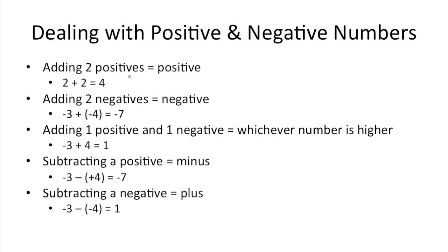So in general, when you have two positives, it's pretty straightforward. It's the arithmetic you learned when you were younger. So 2 plus 2 equals 4, 1 plus 1 is 2, things like that.